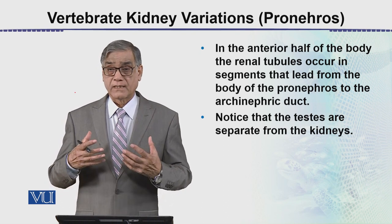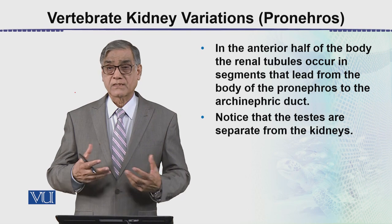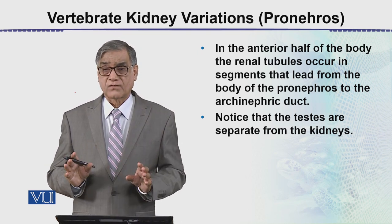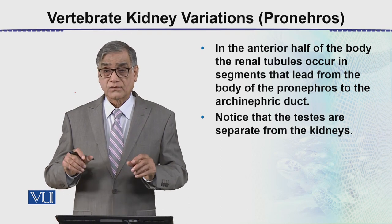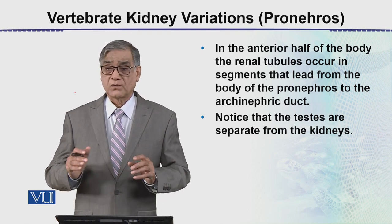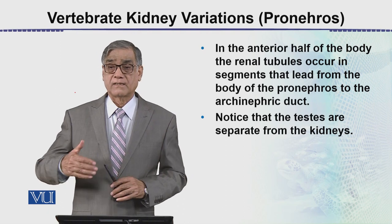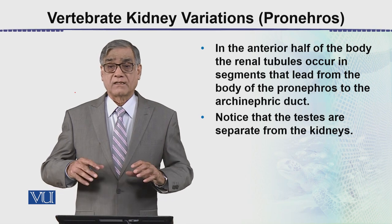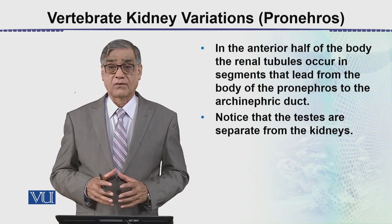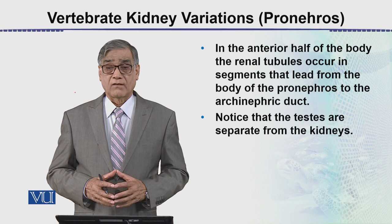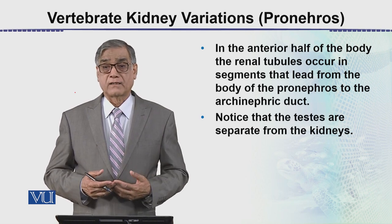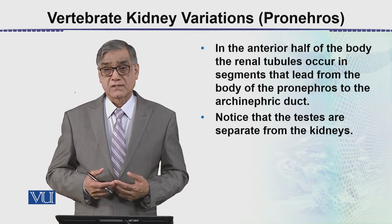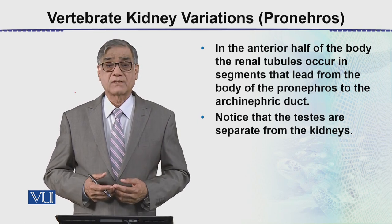As seen in the previous diagram, the testes are quite separate from the kidneys — the reproductive system is a different issue. This is the first type of kidney we have studied, found in primitive animals, which is the pro-nephros. This concludes our discussion of the pro-nephros.